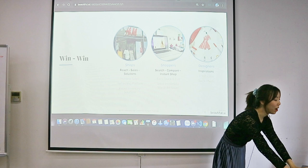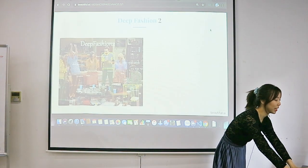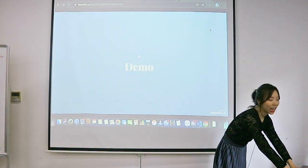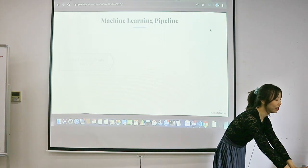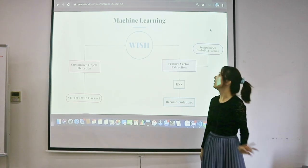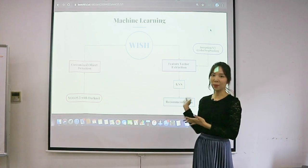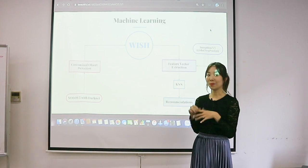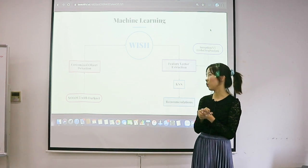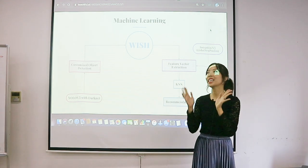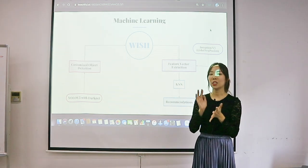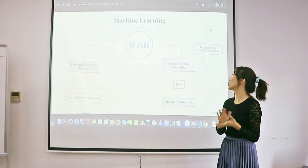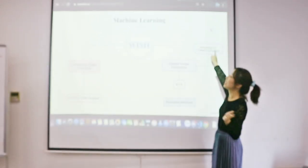So how was I able to do all those things? I combined a few algorithms to create the application. Starting with customized object detection — that's done with YOLO version 3 on a framework called Darknet, which is state-of-the-art right now. I trained with about 200,000 images across five categories and achieved a loss of about 0.006, which is pretty good given that zero is perfect.